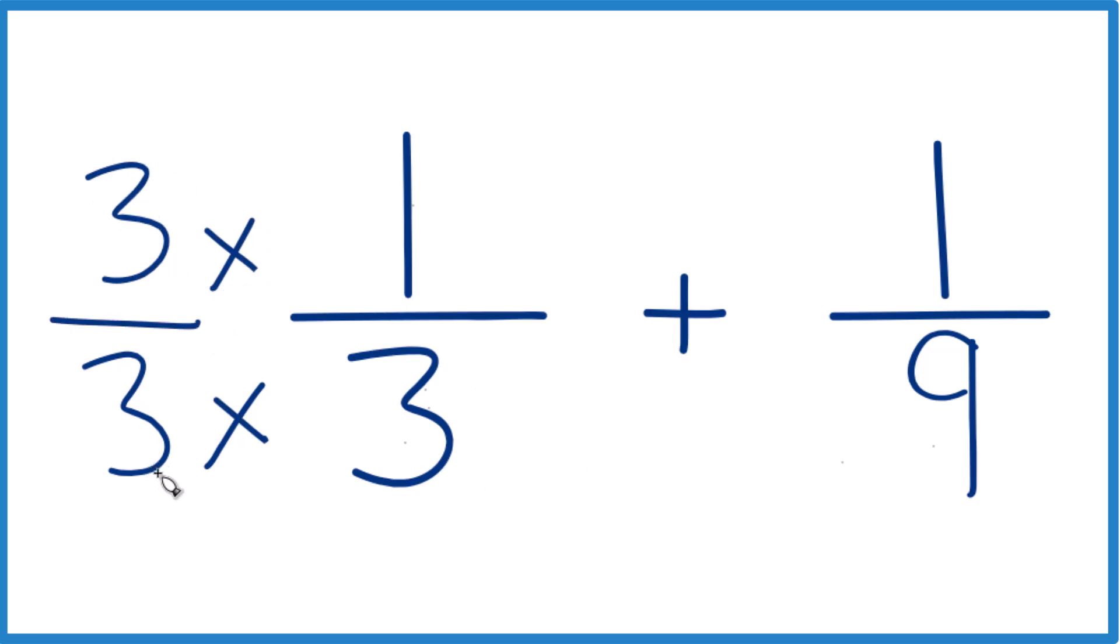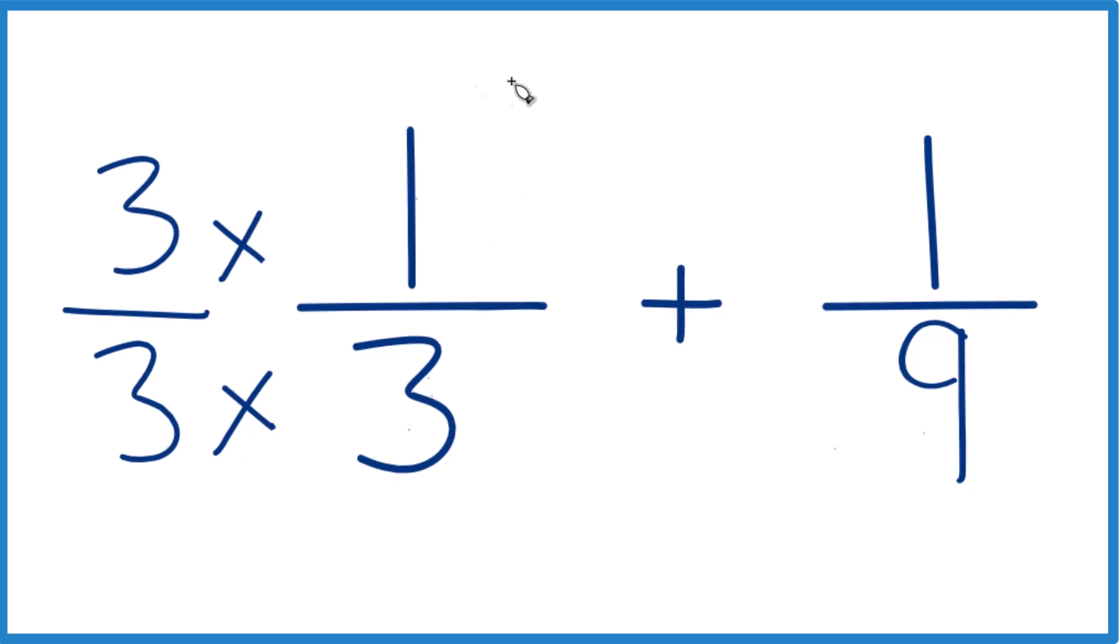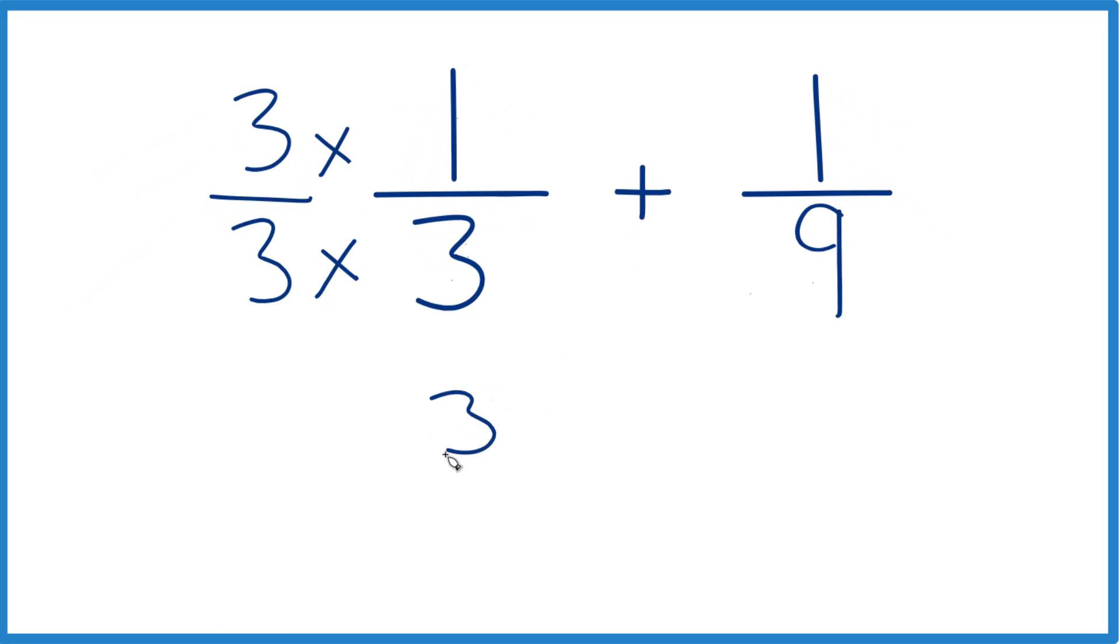That's because 3 divided by 3 is 1, so we don't change the value, just the way it's represented. Because now, 3 times 1, that's 3. 3 times 3 is 9.